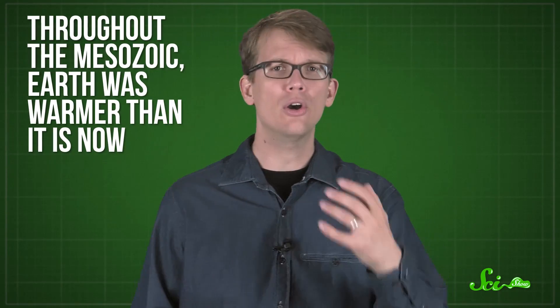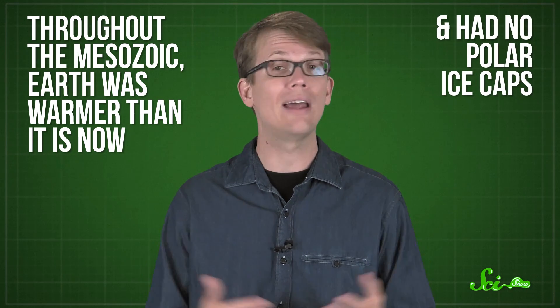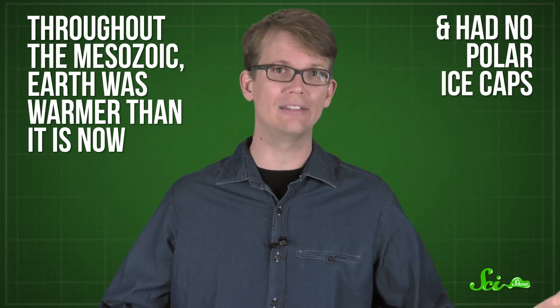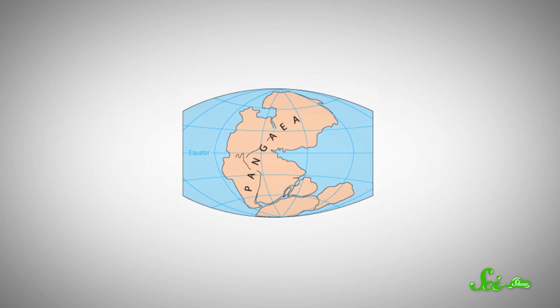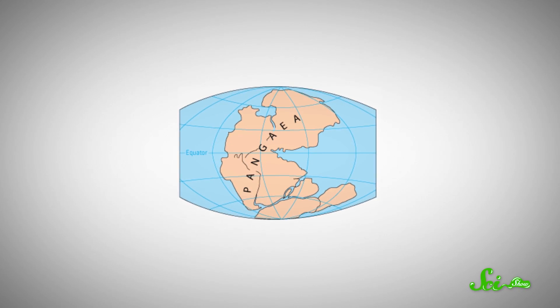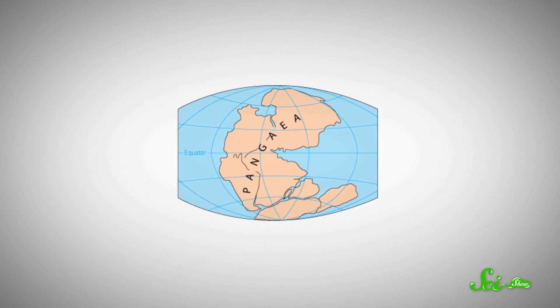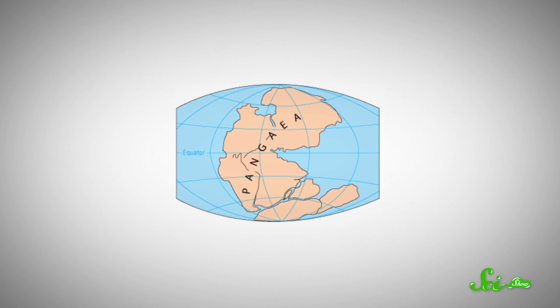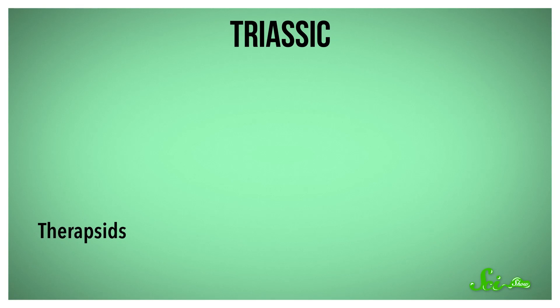Throughout the Mesozoic, Earth was warmer than it is now, and it had no polar ice caps. At the beginning of the Triassic, the Earth's landmasses were lumped together into the dry supercontinent Pangaea. Slowly, life started to repopulate the place, and repopulating meant diversifying.